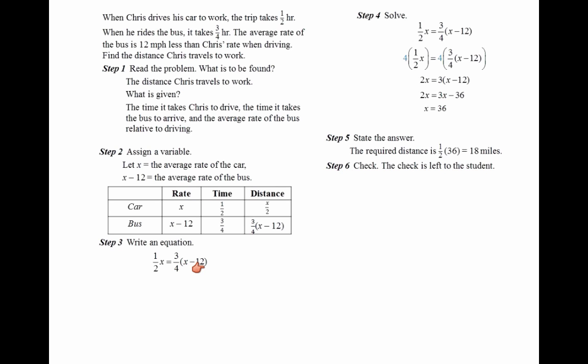One-half x must be equal to three-fourths times x minus 12. To solve this equation, we need to eliminate the fraction. We can multiply the whole equation by 4. That's the LCM. Eliminate the fraction and then solve for x. So x would be 36. The required distance is one-half times 36, which is equal to 18 miles. I'll let you check the answer yourself.